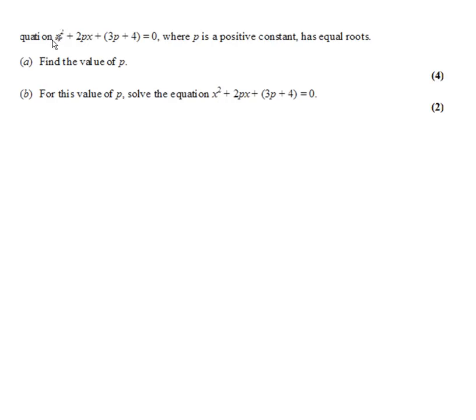This says the equation x squared plus 2px plus 3p plus 4 equals 0, where p is a positive constant, has equal roots. We're going to find the value of p, and for this value of p we're going to solve the equation equals 0.